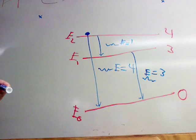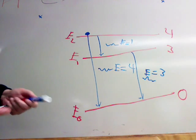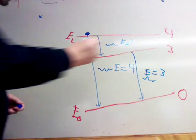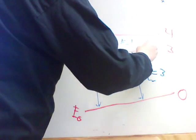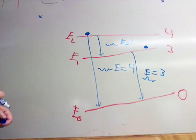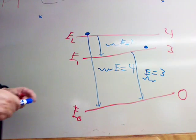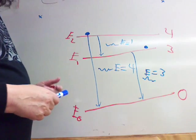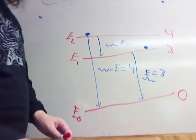Now, let's take the case where the electron is sitting in the first excited state. There are only two things that can happen to this electron.